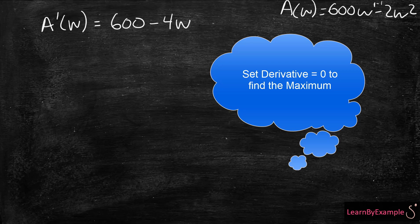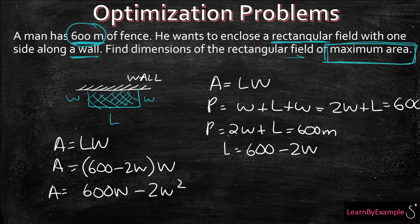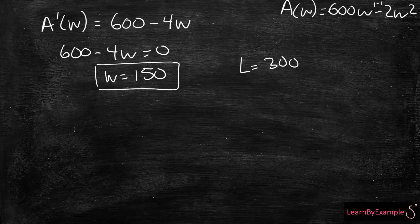So in order to find the maximum, we have to set this equal to 0. And so if you just multiply this out normally, you're going to be left with W is equal to 150. And we know what L is equal to. From here, you can see L is equal to 600 minus 2W. So that means that L is going to equal 300. So now you have your dimensions.